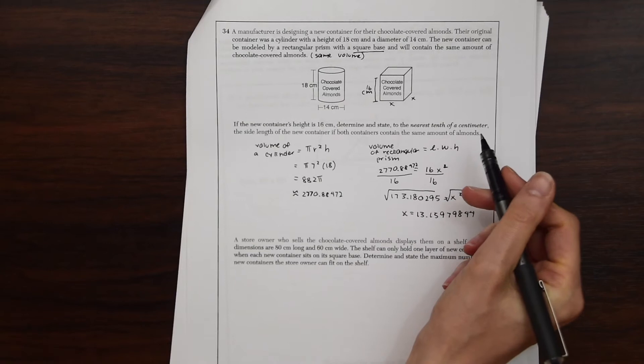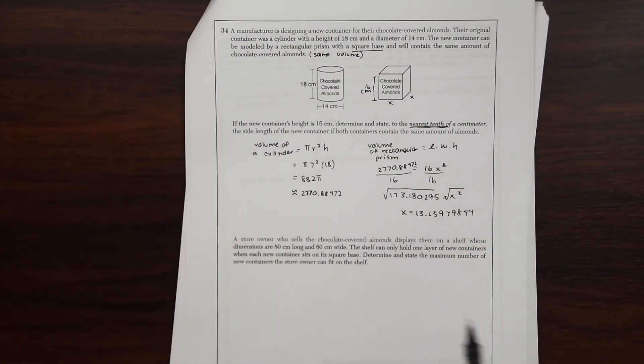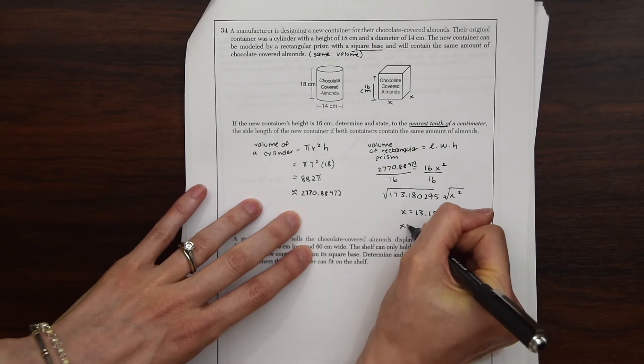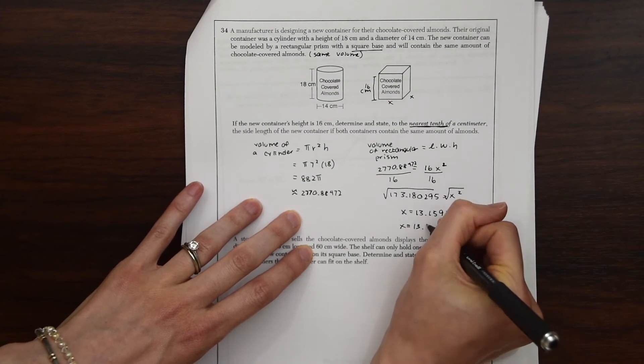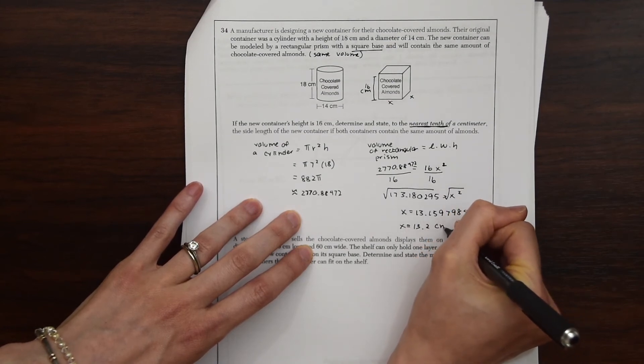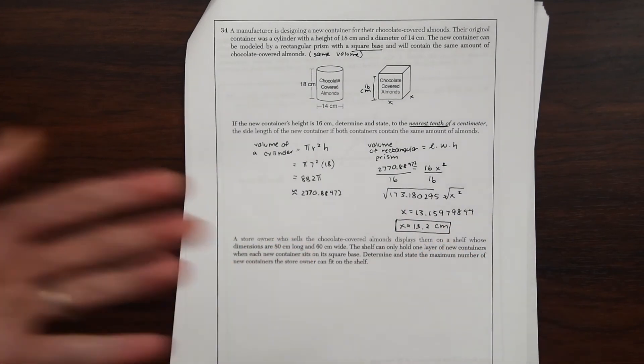So remember, if we go back and look at our question, they want it to the nearest tenth of a centimeter. So just knowing that, we can say this is equal to 13 point, that's one decimal place. So 13.2 centimeters. And that's our answer.